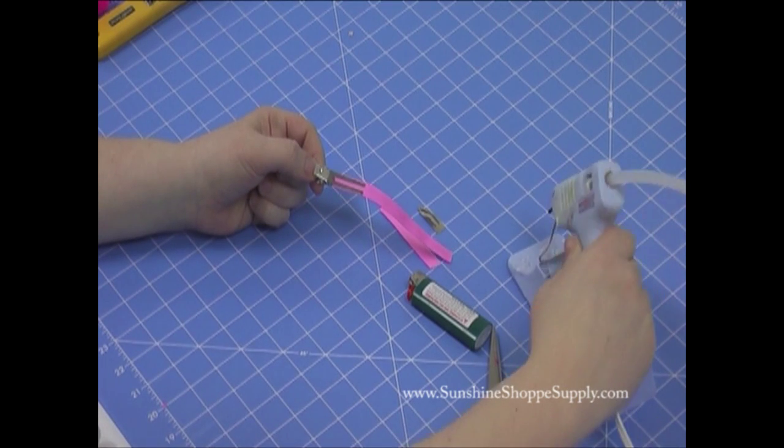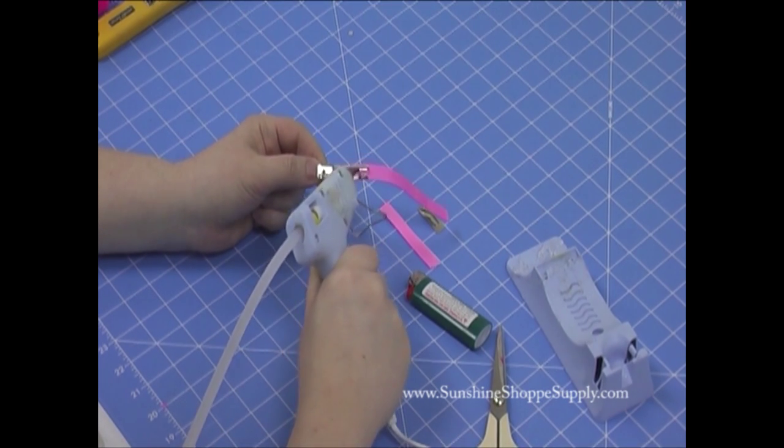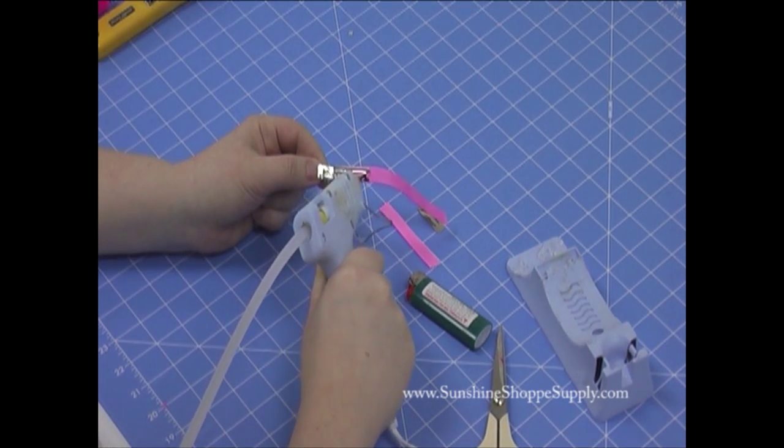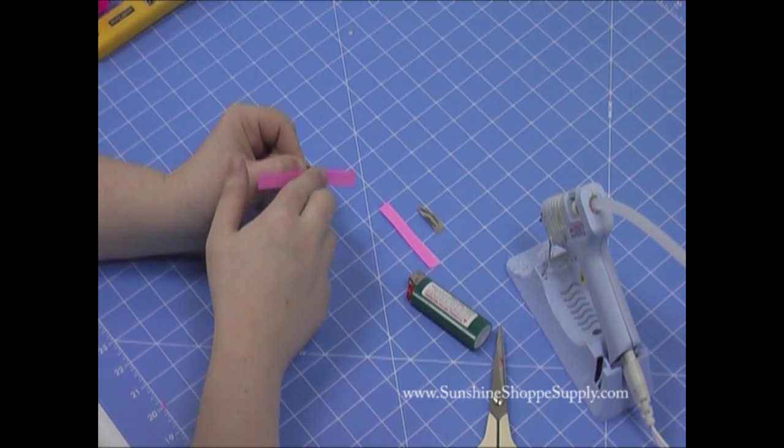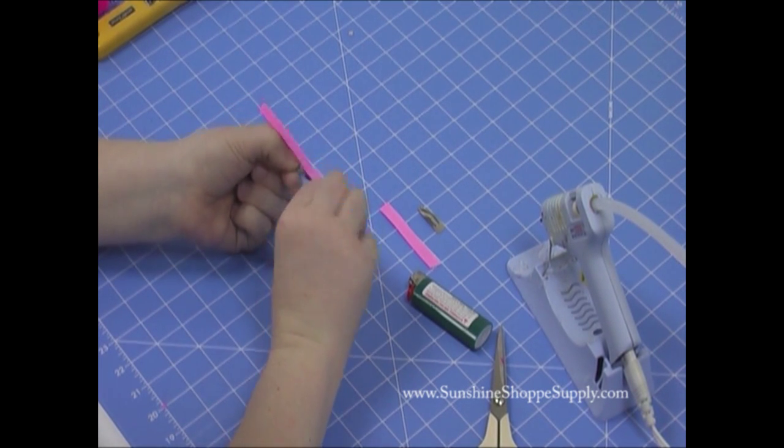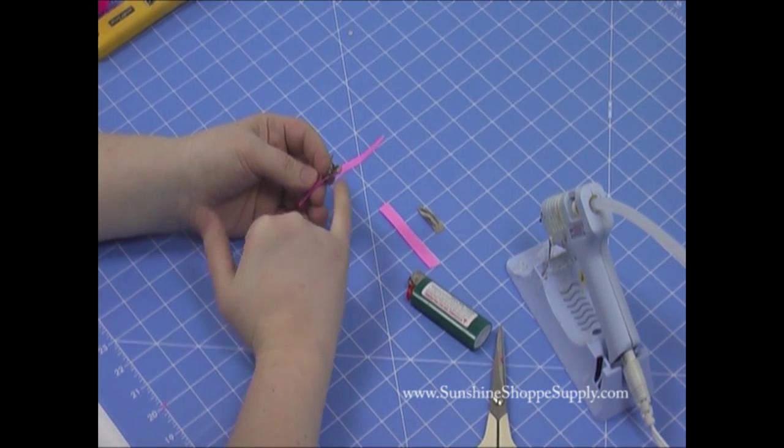Take your glue gun and just put glue all up and down the clip here, including on the inside of that ribbon. Then fold it over and I like to pinch my ends in and not just let them open. I think it looks neater that way.